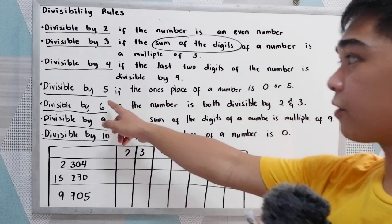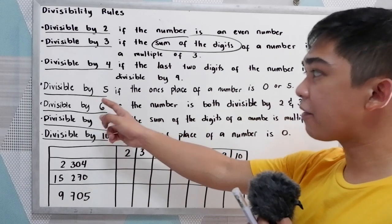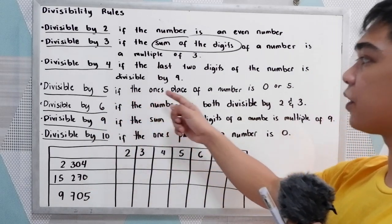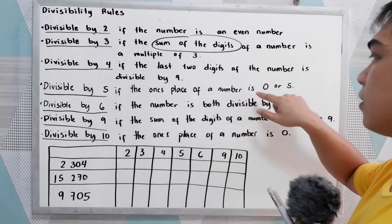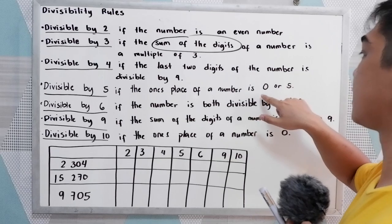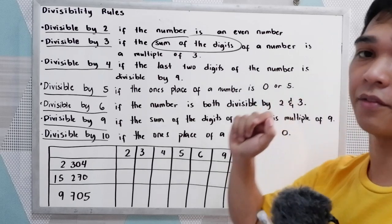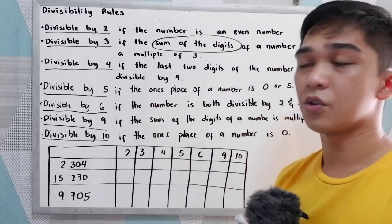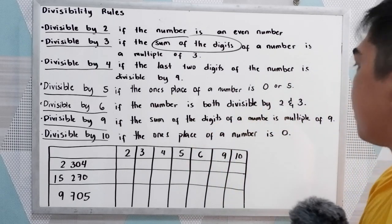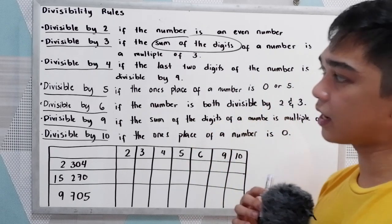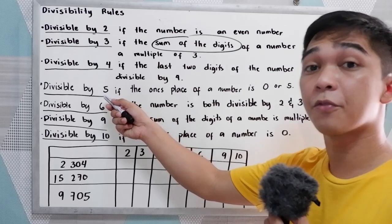Divisible by 5 — very easy. If the ones place of the number is 0 or 5, meaning if the number ends with 0 or 5, then it is divisible by 5.